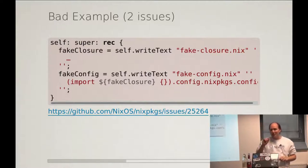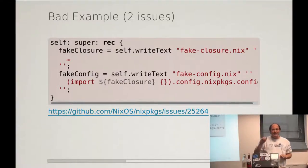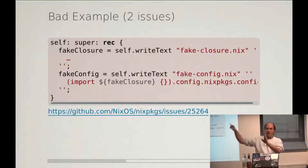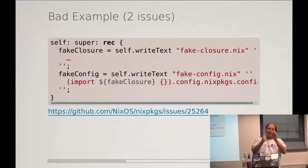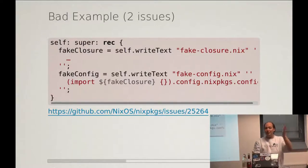The other issue is a bit subtle — it's the fake closure, coming from above because of the rec keyword. It's not nice to make an overlay that uses the rec keyword, because if you use the rec keyword, that means you're looping within your overlay and not from the self at the NixPackages fixed point. This means an overlay which comes after has no opportunity to change that. The fake closure loops inside instead of looping around. If you want to give more opportunities to your users, use self instead of rec.